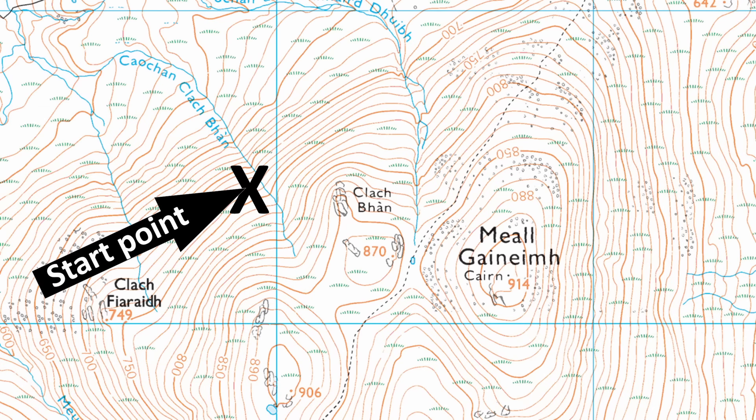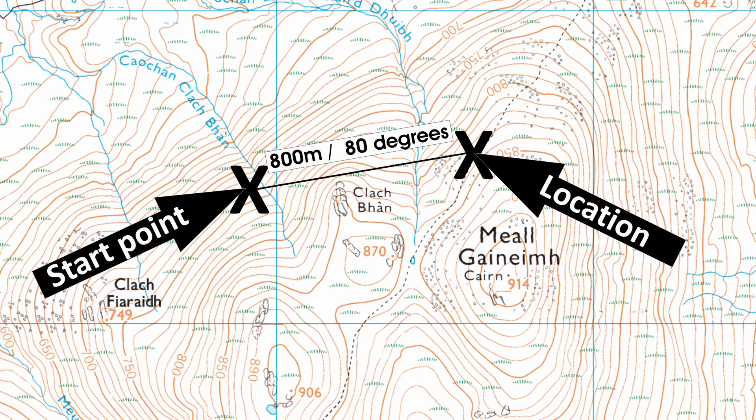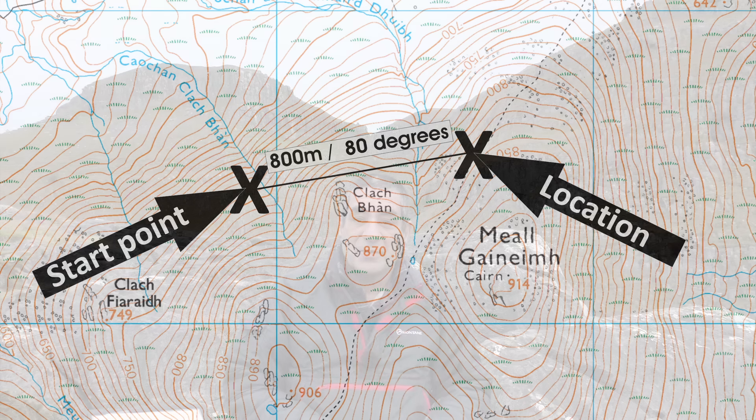As an example, if you know where you started, which direction you've been walking, and how far you've travelled, you'll also know your current location. Or, if you want to head to a specific place that is a certain distance away, you can walk towards it until you've covered that distance and then you'll know you've arrived.